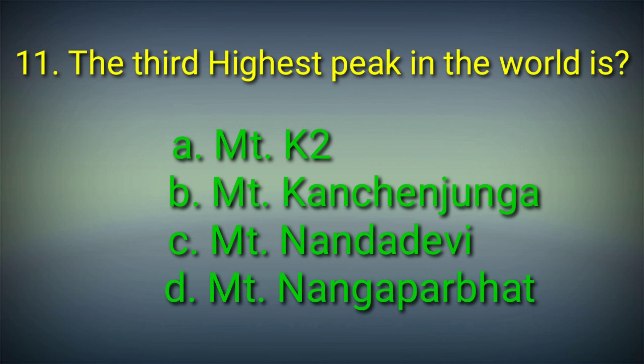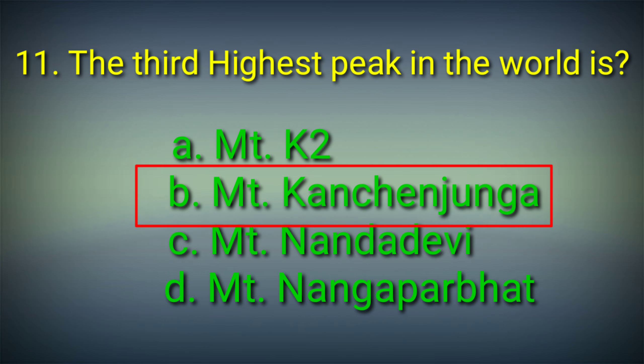11th question: The third highest peak in the world is — Options: A. Mount K2, B. Mount Kanchenjunga, C. Mount Nanda Devi, D. Mount Nanga Parbat. Answer: Option B. Mount Kanchenjunga is the third highest peak in the world.